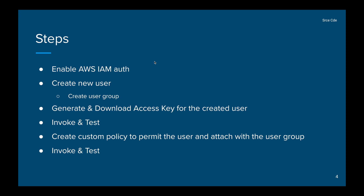The first step is to enable AWS IAM authorization for the given method and resource. Then we will create a new user followed by the creation of a user group. Once the user is created, we will generate and download the access key. Then we will invoke the API endpoint without attaching the policy — it will throw a 403 Forbidden error. Then we will create a custom policy granting execute-API permission, attach it to the user group, and re-invoke the API endpoint.